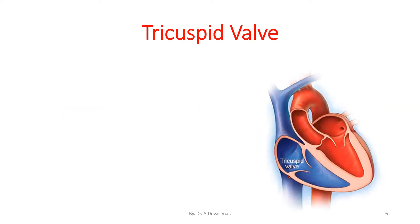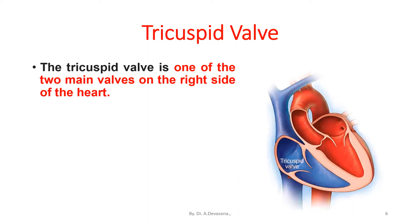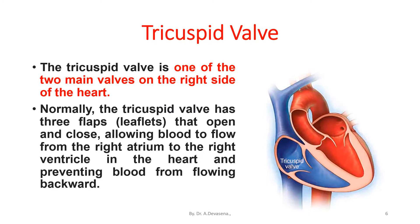The tricuspid valve is one of the two main valves on the right side of the heart. Normally, the tricuspid valve has three flaps that open and close, allowing blood to flow from the right atrium to the right ventricle and preventing blood from flowing backward.